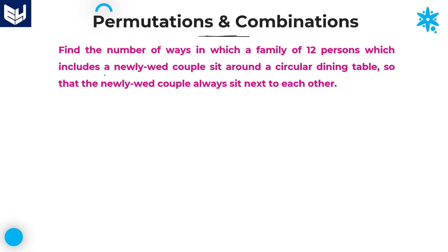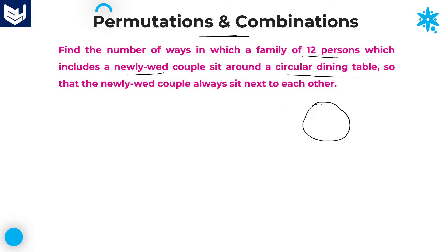Look at the first problem: find the number of ways in which a family of 12 persons, which includes a newly wed couple, sit around a circular dining table so that the newly wed couple always sit next to each other. The sentence is very clear — we are talking about a circular dining table with 12 members total.